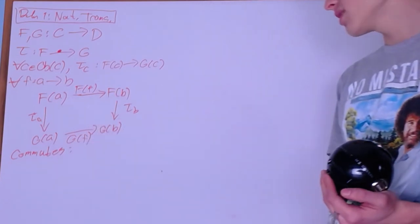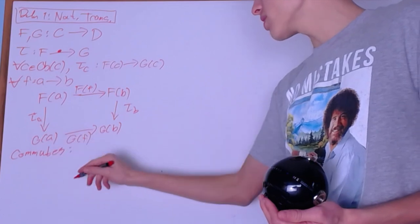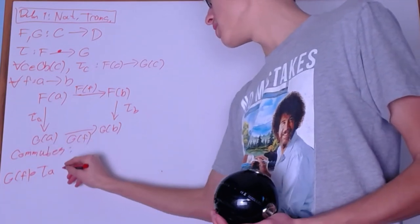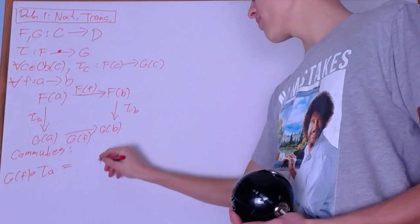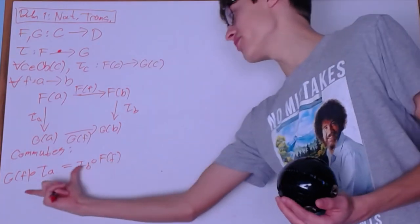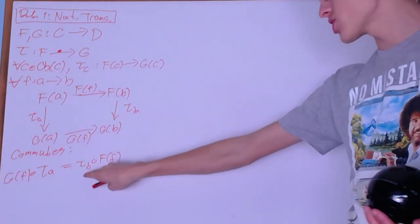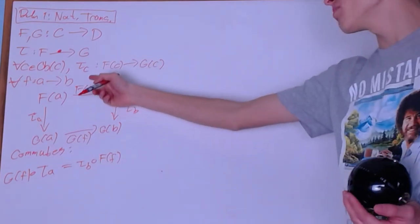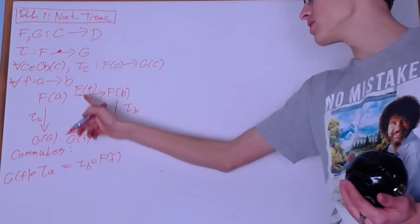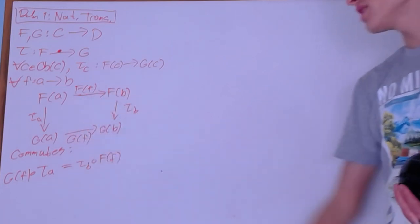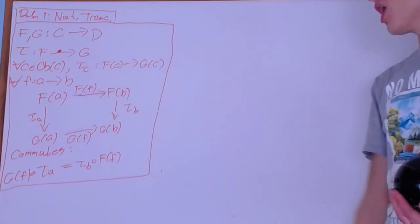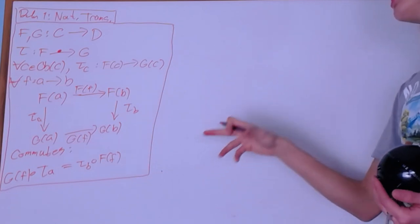What this is saying is: tau A first, then G of f — so G of f composed tau A — must equal F of f and then tau B. If you change the functor, then you switch and change the object. The first condition is the transition between functors applied to objects; this commutative diagram is the transition between functors applied to arrows. Natural transformations are really transformations on the images of these functors, in both the arrows and the objects.